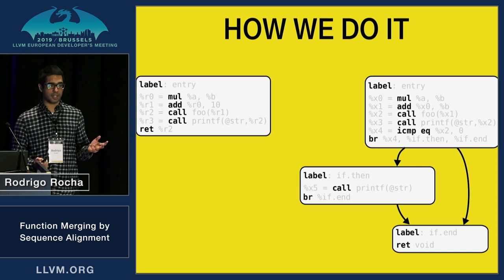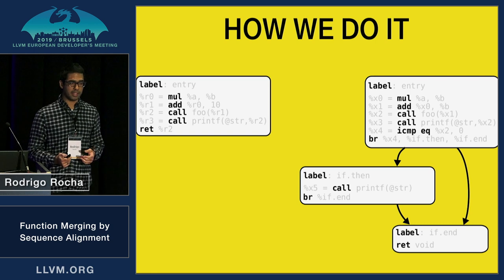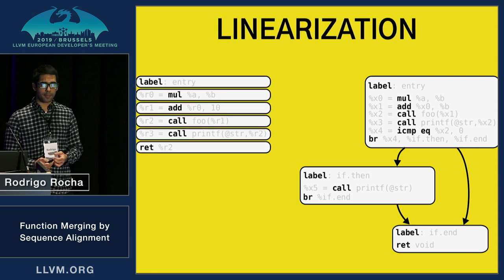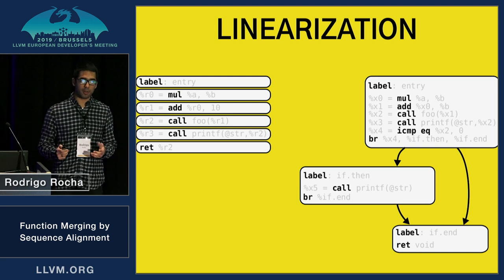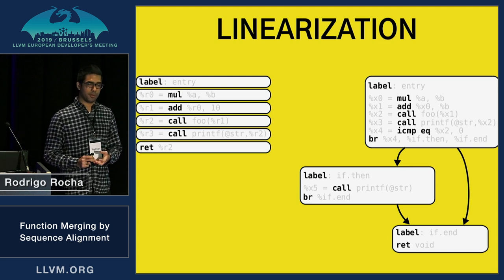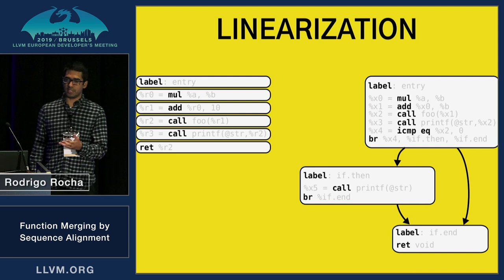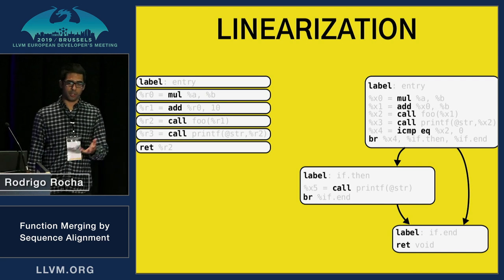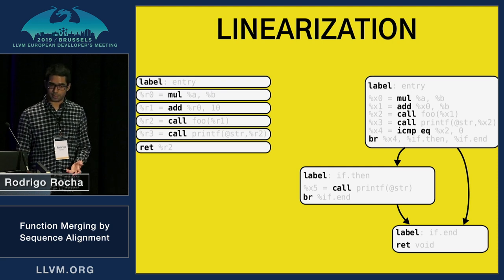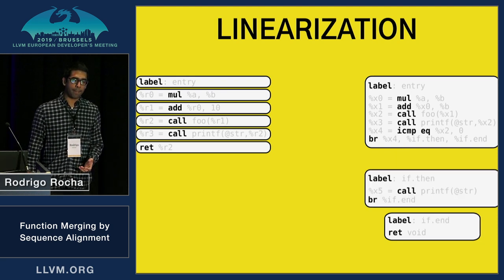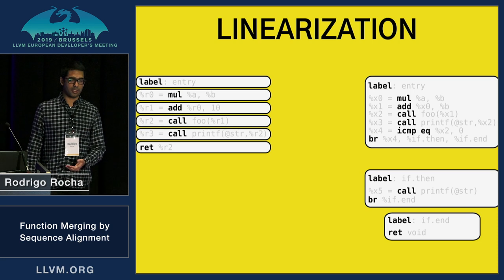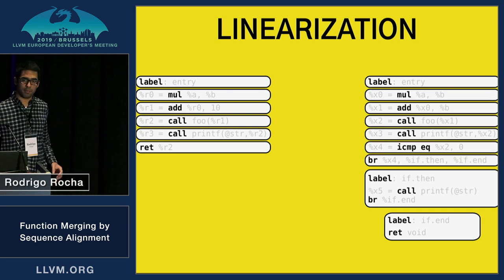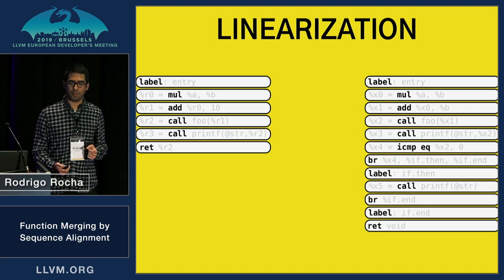The first function is trivial to linearize — we just take the instructions as they appear in the basic block. Function two has a slightly more complex CFG, so we first need to decide on an ordering for these basic blocks. For example, we use the reverse post-order for that. And then we can just take the instructions as they appear in this order, first breaking down basic block one and so on.